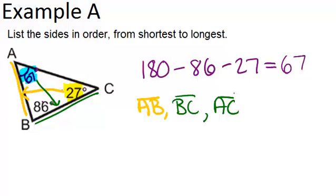So, from shortest to longest, the sides are AB, then BC, and then AC.